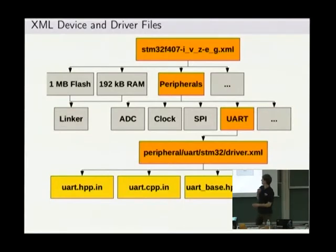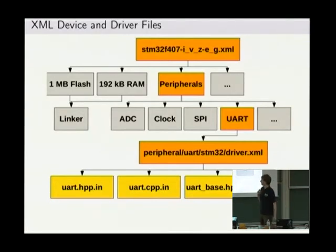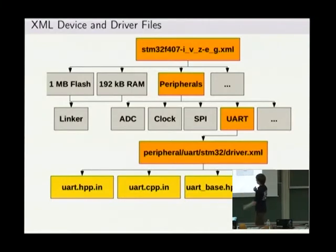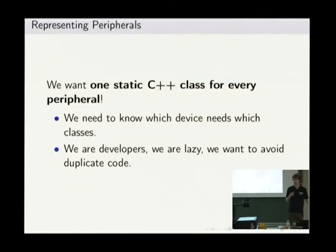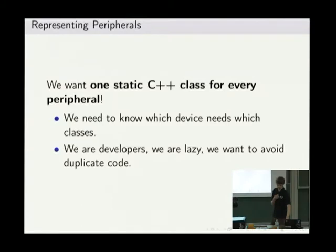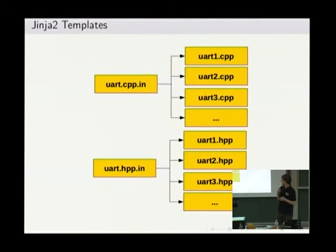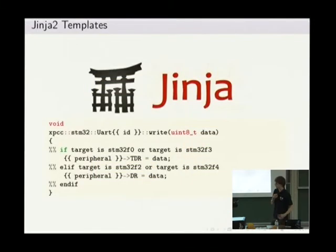The XML device file for an STM32F407 in its different variations tells us what kind of memory the device has and what peripherals it uses. We create those XML files through a script we wrote from the manufacturer information, and you can also adjust them by hand. The device file lists peripherals like UART, which tells the build system to search for the UART driver. The UART driver has an additional XML file telling the build system what files it needs. We use a single basic template and generate all the UART classes using the Jinja2 template engine — which comes from web development but fits our needs quite neatly.